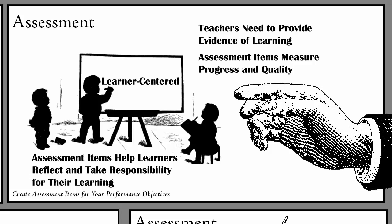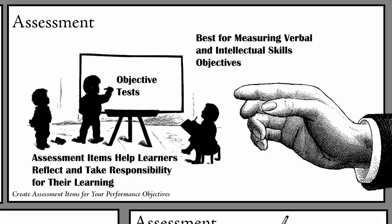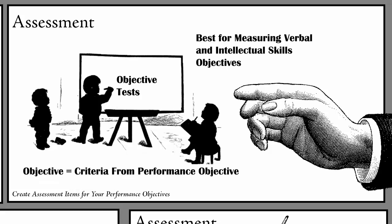Research by Dick and Carey and others suggests that objective tests are best for measuring verbal and intellectual skills objectives. The word 'objective' in this context is synonymous with the criteria from your performance objectives. When developing assessment instruments, you'll be looking at the criteria in your performance objectives to develop the best instrument for measuring. Some intellectual skills objectives may not be able to be measured using objective tests, and for those situations another type of assessment method may be necessary.